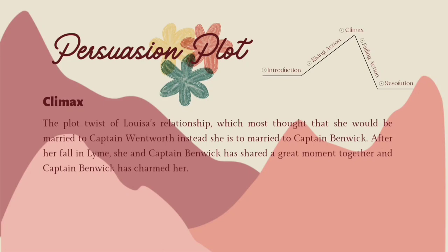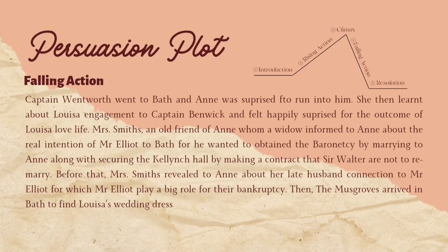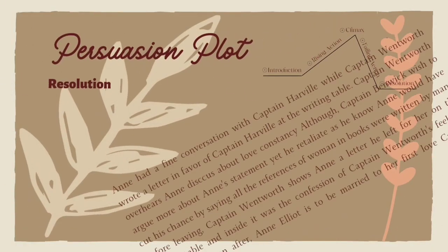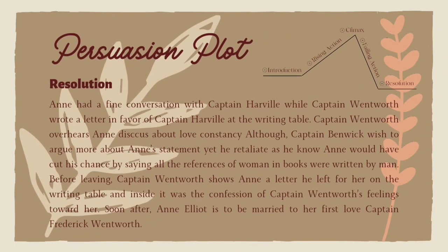Later, Anne ventures to Bath with Lady Russell and learns about her father's reconciliation with Mr. Elliot. The climax occurs when Louisa is to be married — though good news for Anne, Captain Wentworth is still available. Anne then finds out the real intention of Mr. Elliot regarding the baronetcy and Kellynch Hall, and also learns that Mr. Elliot was involved in the bankruptcy of Mrs. Smith and her late husband. Anne runs into Captain Wentworth in Bath, and after overhearing a conversation, he writes and leaves a confession letter to Anne. Captain Wentworth then proposes to Anne and they are married.